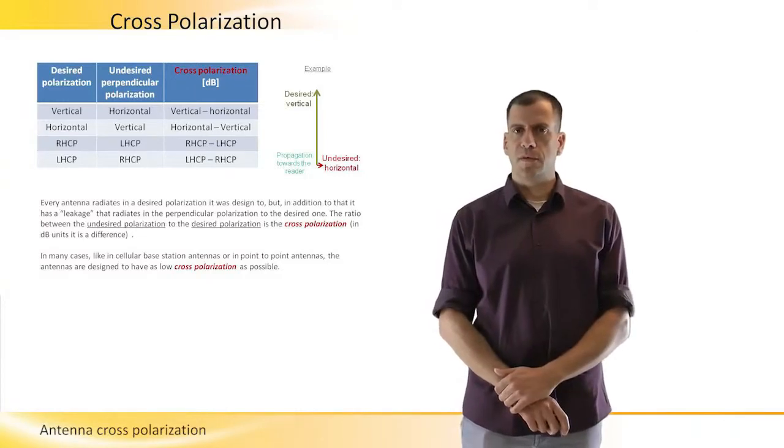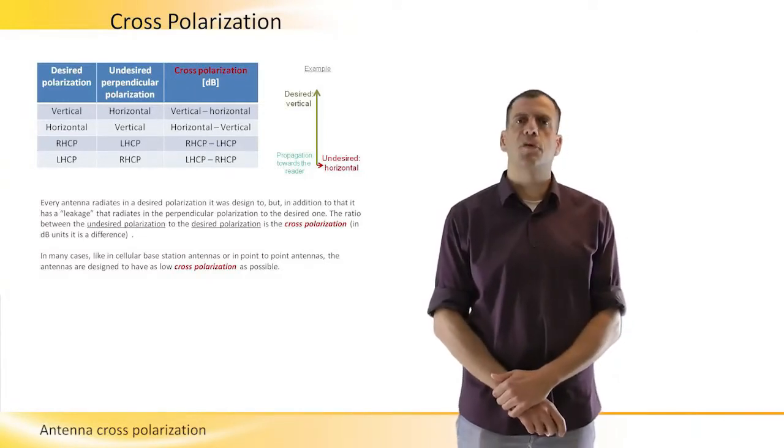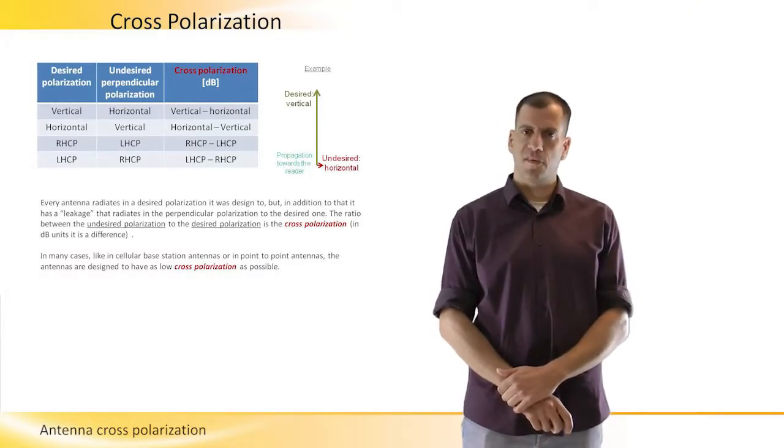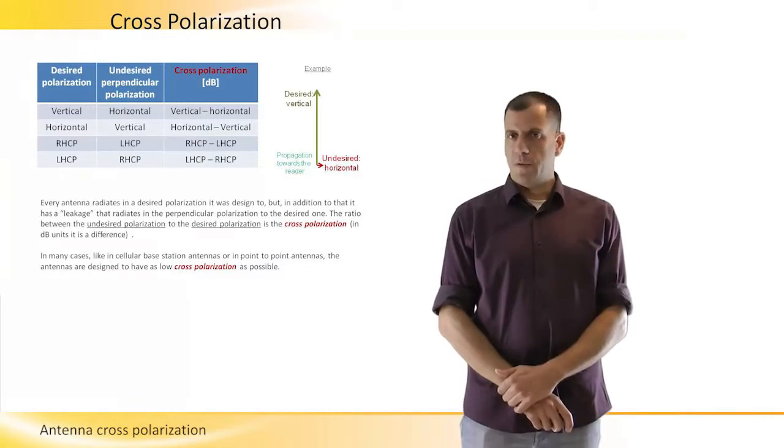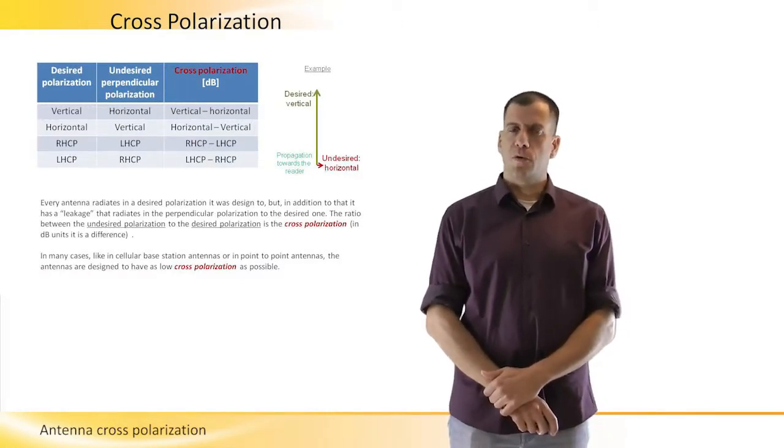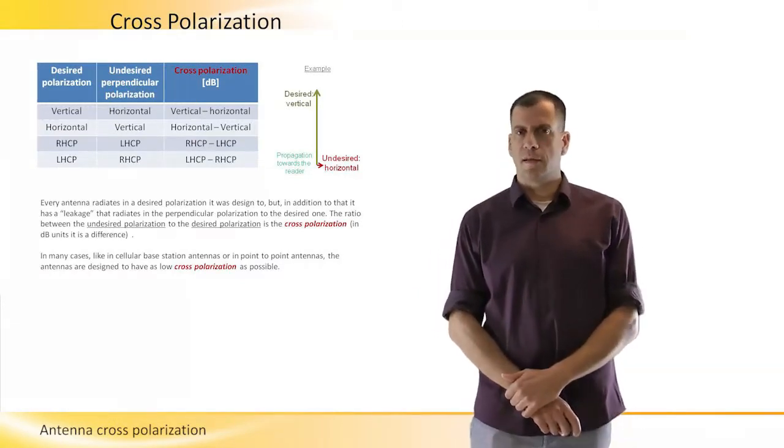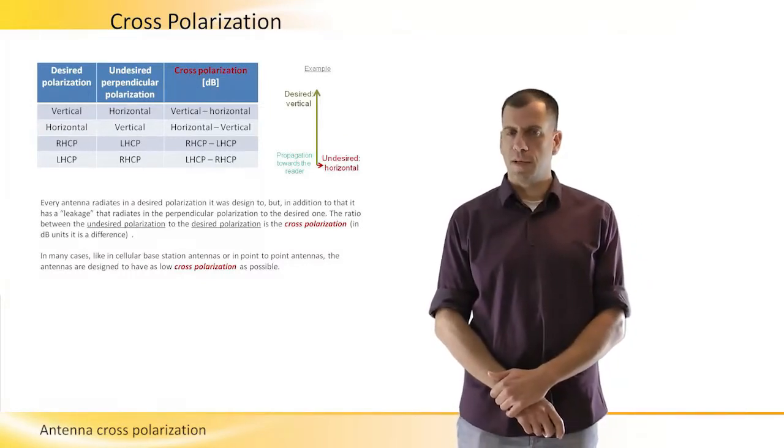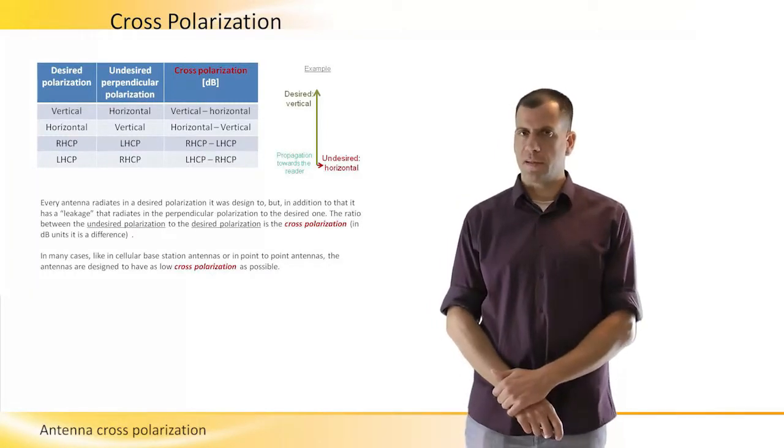We wouldn't be able to receive anything with a vertical polarization antenna if we transmit horizontal polarization energy or power. And that's why we want all the energy to be in the polarization that we wanted it to be. That's how we can control it.